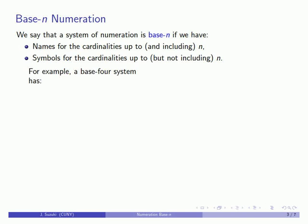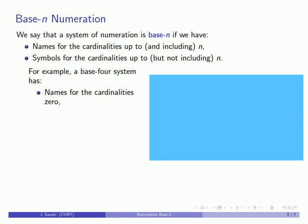And there's a reason for that distinction that we'll see in a moment. For example, a base 4 system has names for the cardinalities up to 4. So we have names for the cardinalities 0, 1, 2, 3, and 4.